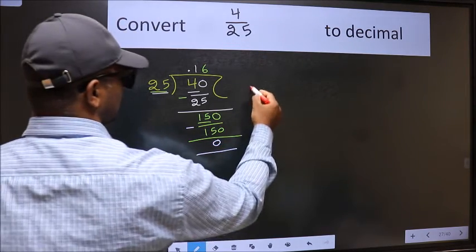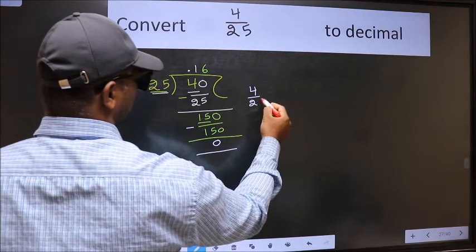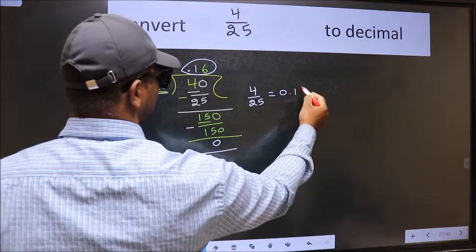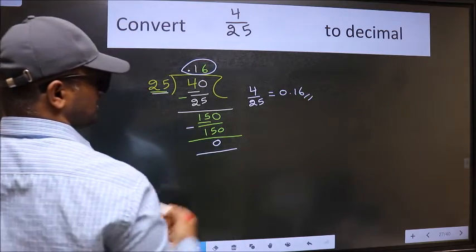Therefore, the decimal of 4 by 25 is this one. 0.16 is our answer.